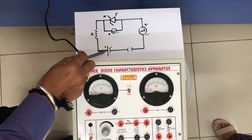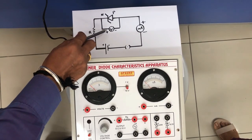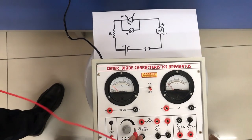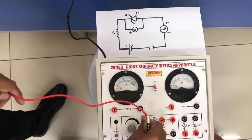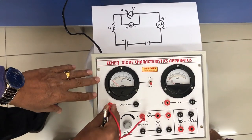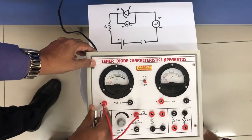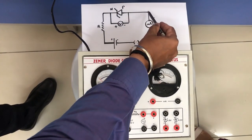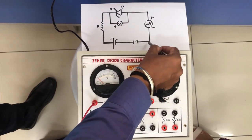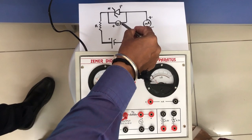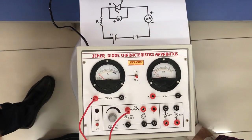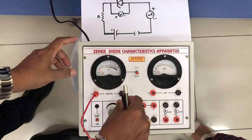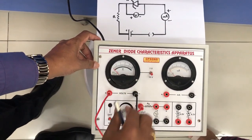The positive of the battery is connected to the positive of the voltmeter. The negative of the battery is connected to the negative of the voltmeter.